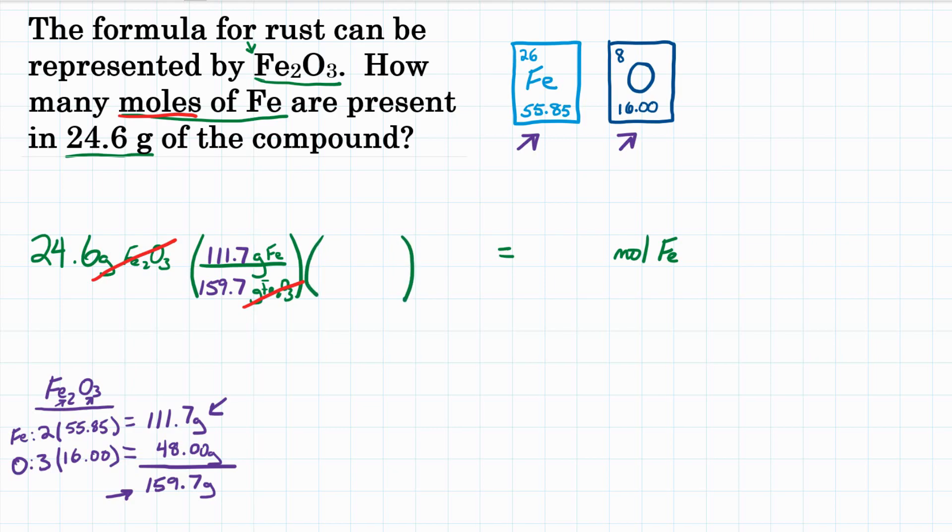So we need to convert to moles, so another conversion factor. Grams of Fe on the bottom, moles of Fe on top. For one mole of iron, we've already used this number, that's 55.85 grams, so that goes on the bottom. Canceling out our units, grams of Fe cancel grams of Fe, one on top, one on bottom, so they cancel out.